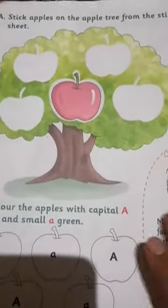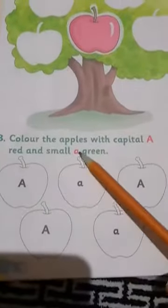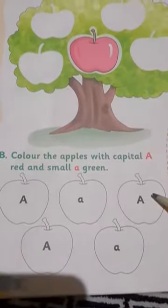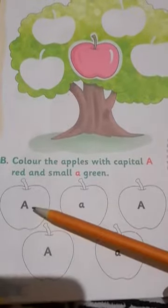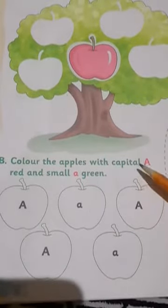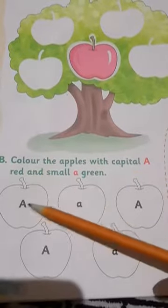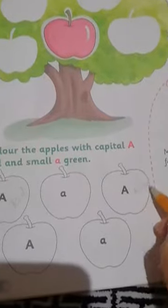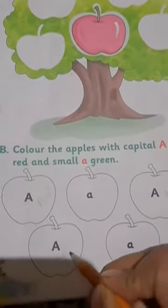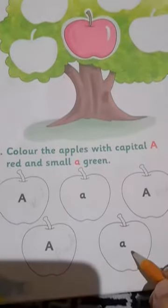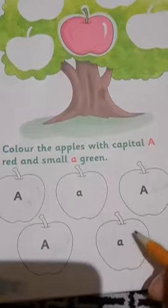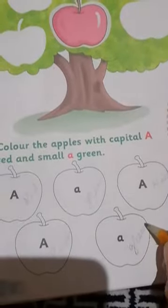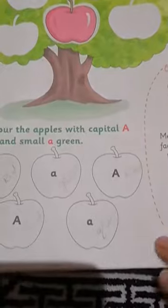After that, color the apples with capital A red and small a green. Hamehne yehaan pe kuch apples diye gaya hai. We have five apples. Some of them have the capital A letter and some have small. So, what do we have to do? Hamehne jispe capital A hai, usmeh red color karna hai. For example, this one. Aap ismeh red color karo ge. Ismeh bhi aap red color karo ge. And here also you'll do red color on this. These are small a letters. Yeh joh alphabets hai, yeh small a ke hai. So, you'll color them green. Aap isko bhi green color karo ge. Red and green. Capital A and small a.